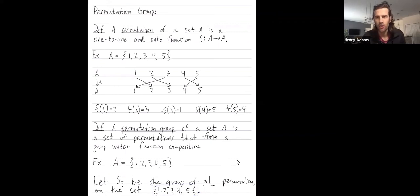But you could also consider subgroups of S5. You don't include all of the permutations, you only include some of the permutations. But we'll look at the group of all permutations on the set of numbers from 1 up to 5.